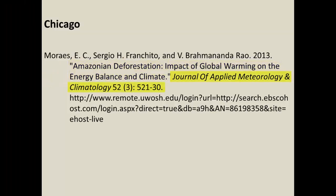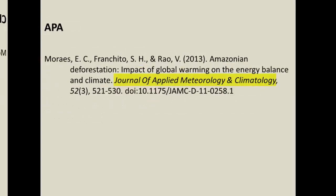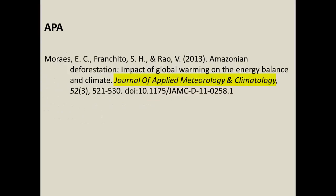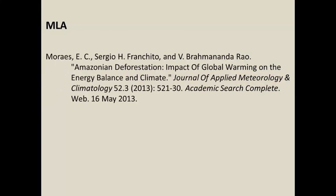Next to the title of the article is the title of the journal: Journal of Applied Meteorology and Climatology. Here's where many people get confused — how are you supposed to tell what's the title of the journal and what's the title of the article? A good way to determine the difference between the two is by looking for italics. The title of the journal will appear in italics, while the article title will not.